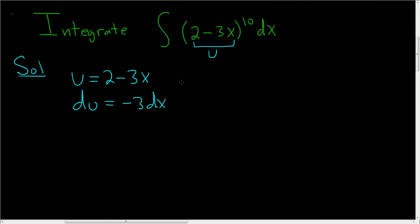And that's good, because we're almost there. We don't have a negative 3 here, so what we'll do is divide by negative 3. So we end up with negative du over 3 equals dx.